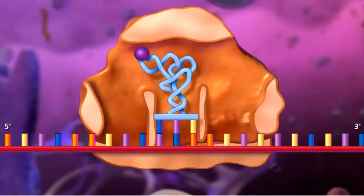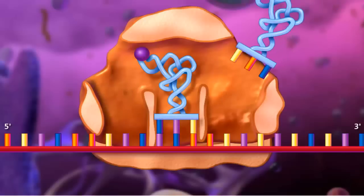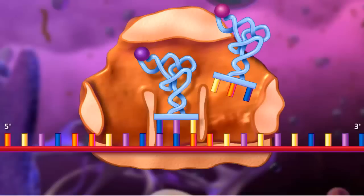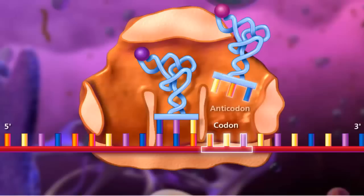In the large ribosomal subunit, there are three distinct regions called the E, P, and A sites. During elongation, individual amino acids are brought to the messenger RNA strand by a transfer RNA molecule through complementary base pairing of the codons and anticodons.